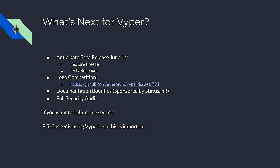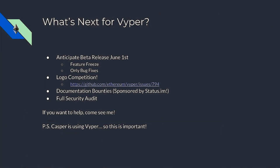If you have any design skills, we're currently doing a logo competition. It's a little late for entries but you can submit them anyway. You can go vote on what other people have submitted — just give a thumbs up on the entries you like. We're going to have a lot more documentation bounties coming soon, sponsored by Status, who is also sponsoring one of our lead developers. We're going to do a full security audit once we go into beta. It's really important because Casper is using Viper directly, so the more usage we get of this programming language, the more secure Casper is — which is fundamental infrastructure that's going to enable Ethereum's future.